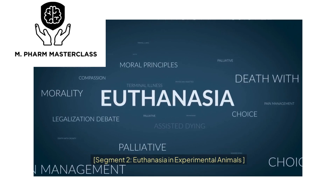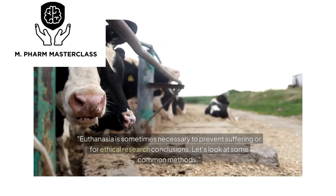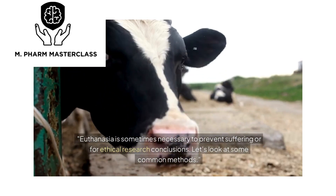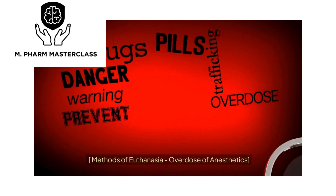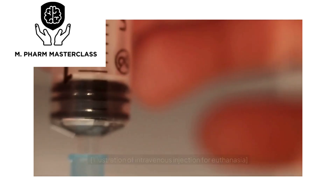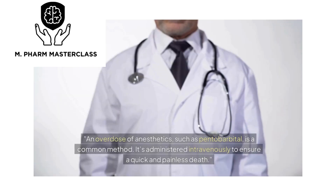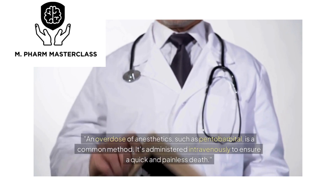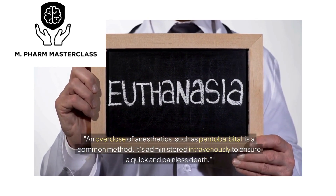Euthanasia in Experimental Animals. Euthanasia is sometimes necessary to prevent suffering or for ethical research conclusions. An overdose of anesthetics, such as pentobarbital, is a common method. It is administered intravenously to ensure a quick and painless death.